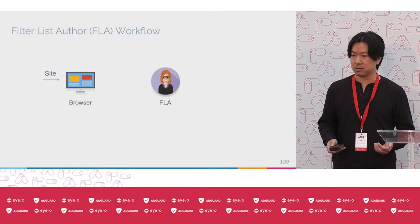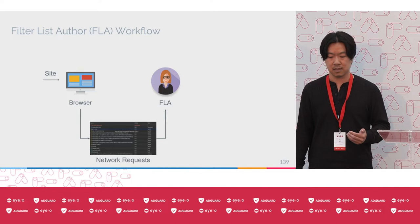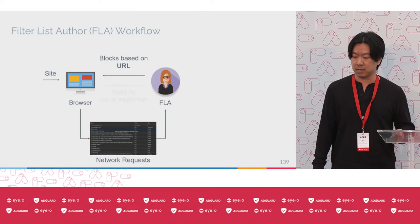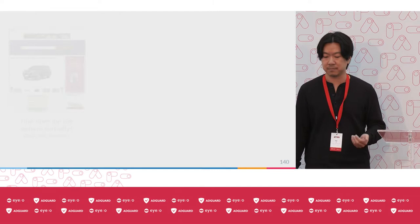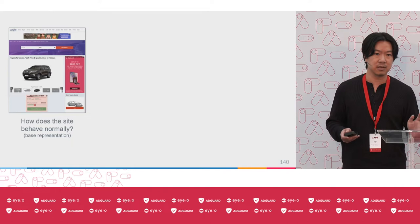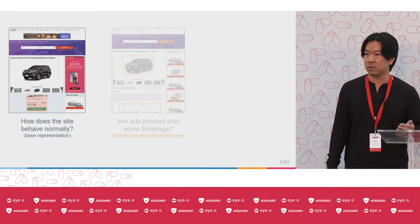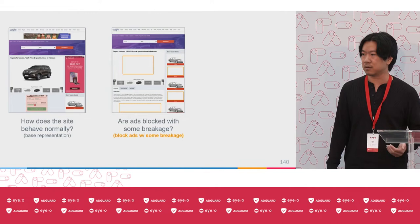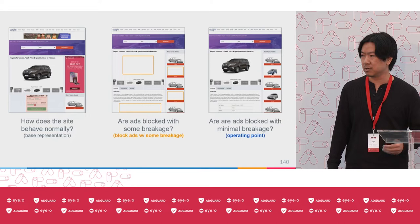In order to do so, she's going to look at the list of possible outgoing network requests and then choose one to block based on her domain knowledge as a filter list author or keywords like 'ads' or 'bidding'. Once she blocks it, she has to test the effectiveness through visual inspection. She can look at how the site behaves naturally — where are the ads being loaded, where is the legitimate content like images and text. We call this the base representation of the site. Once the request is blocked, she checks whether the ads are being blocked and whether any legitimate content is missing. The goal is to block all ads with minimal or no breakage. We call this the operating point.